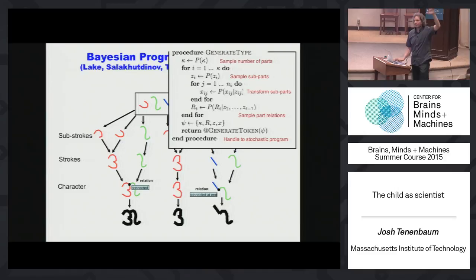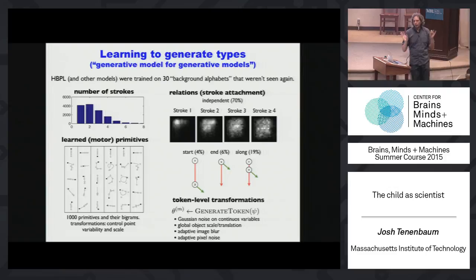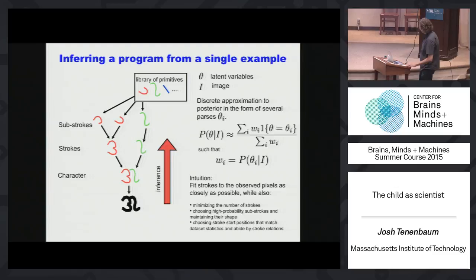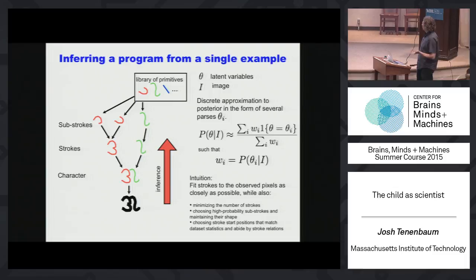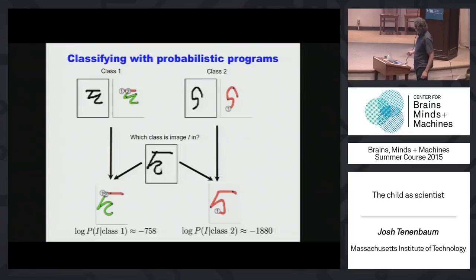Just like you can draw many examples of any concept, you can call that function many times: generate token, generate token, generate token. Your concept of a character is a generative function. In order to learn this, you have basically a prior on those programs that comes from a program-generating program — that's the generate type program. The model does a kind of learning-to-learn from a held-out unsupervised set, learning the parameters of this program-generating program, which characterize how we draw things in general. When you see a new character, effectively the model is parsing it into its parts, sub-parts, and relations — but that parsing is basically the program synthesis.